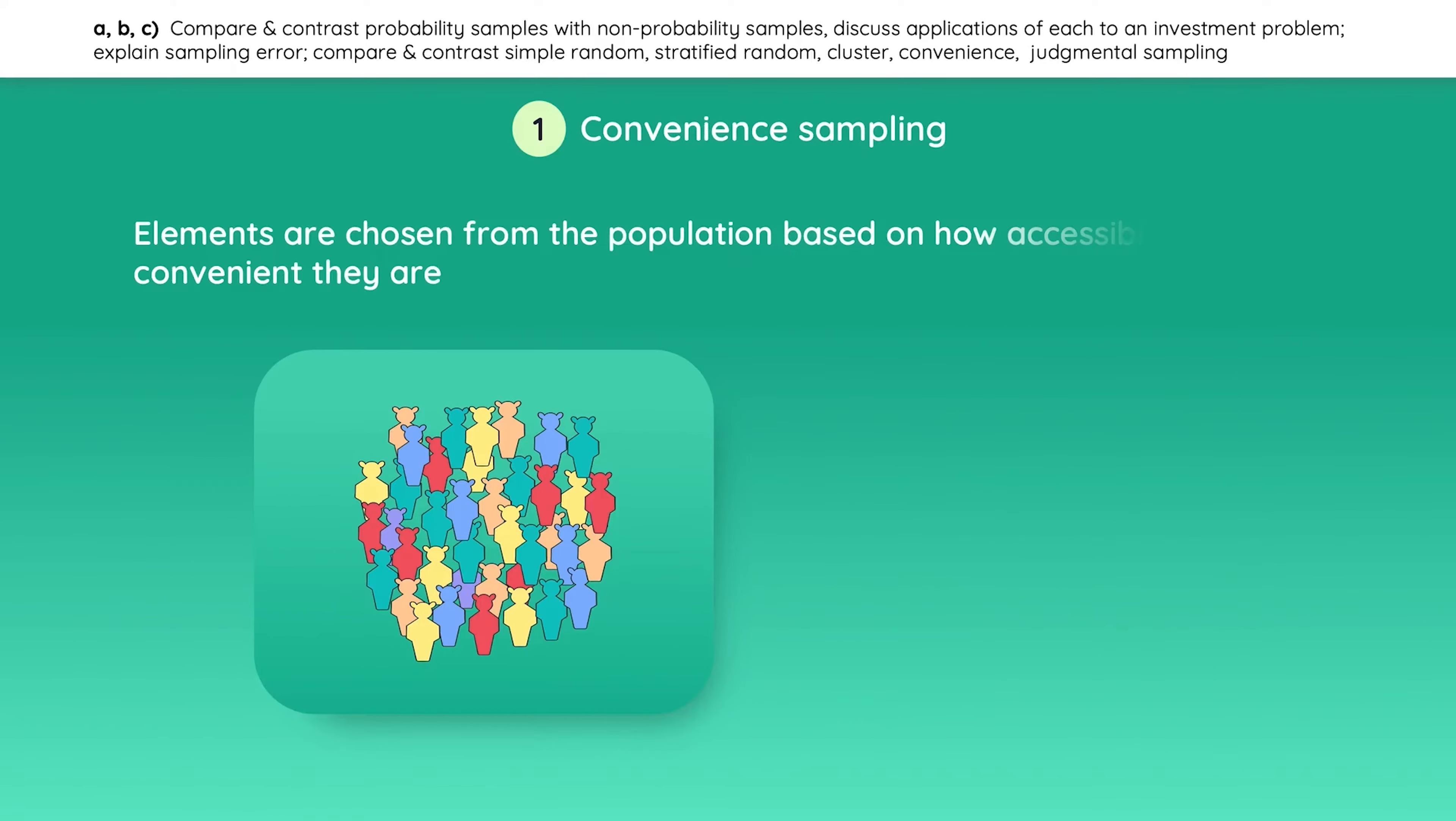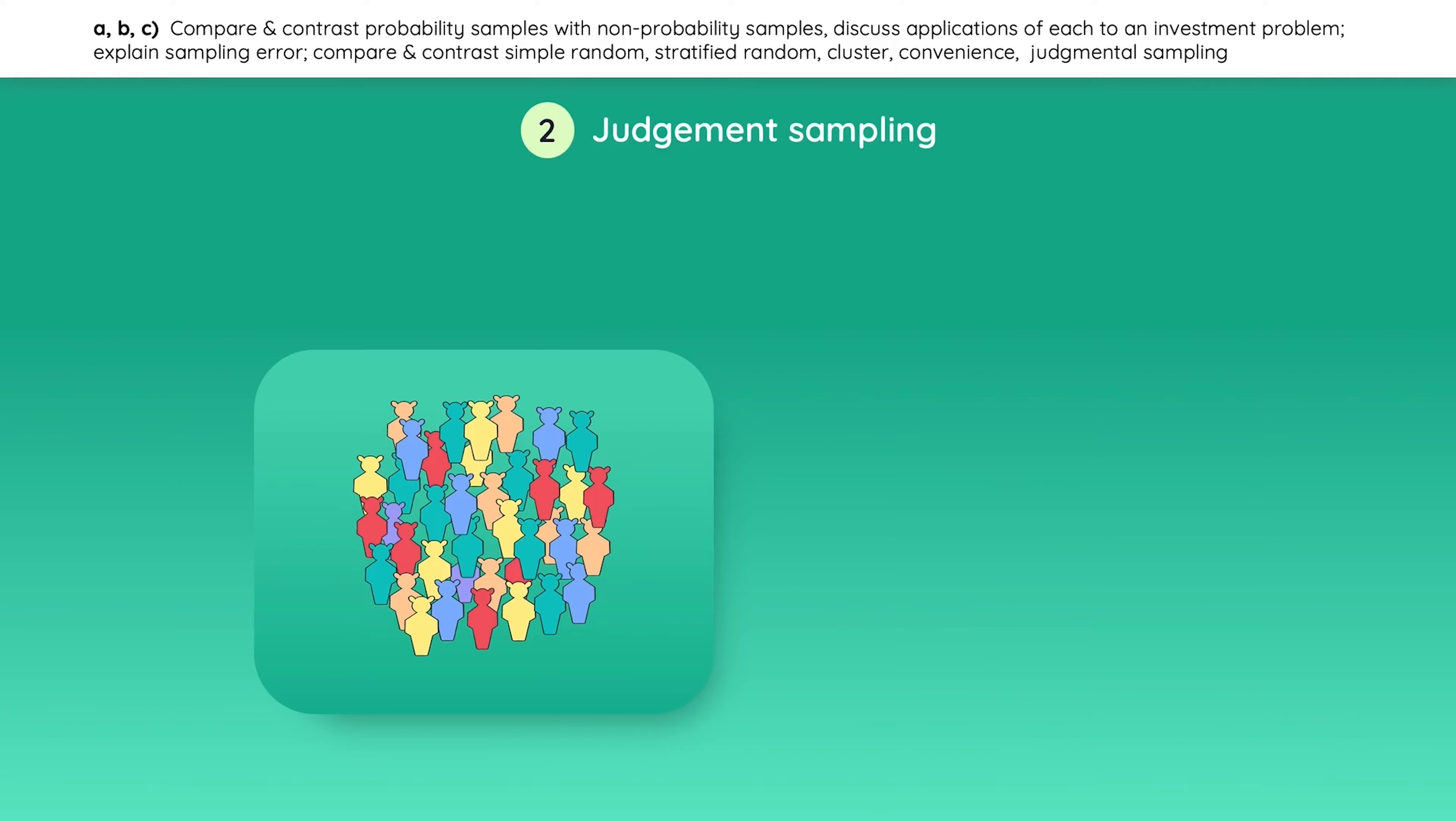Convenience sampling is when elements are chosen from the population based on how accessible or convenient they are. For example, if red observations are the easiest to interview, the sample of people interviewed will probably include a large amount of red observations. And finally, judgment sampling involves selectively handpicking elements from the population based on the researcher's expertise and knowledge.